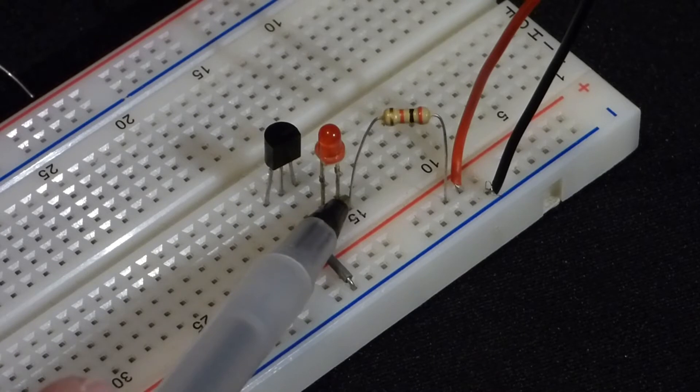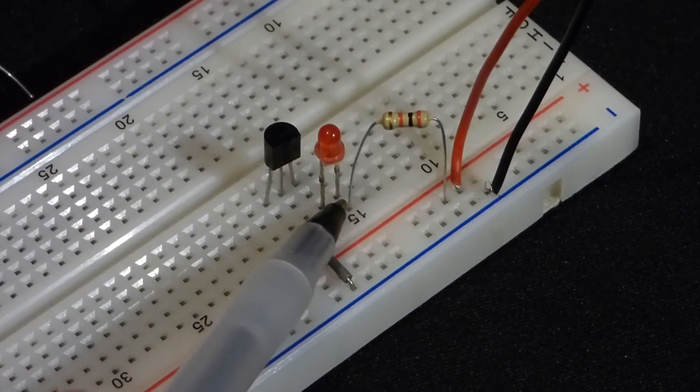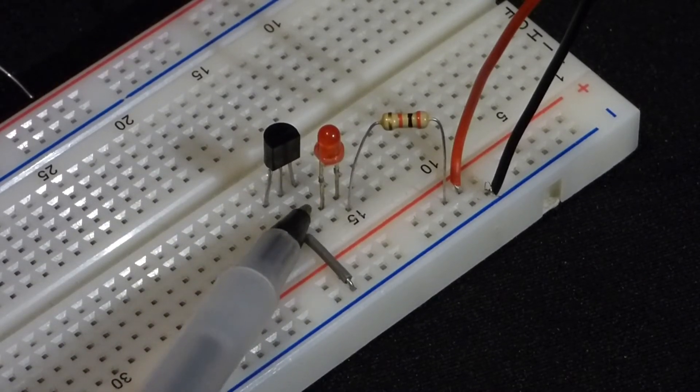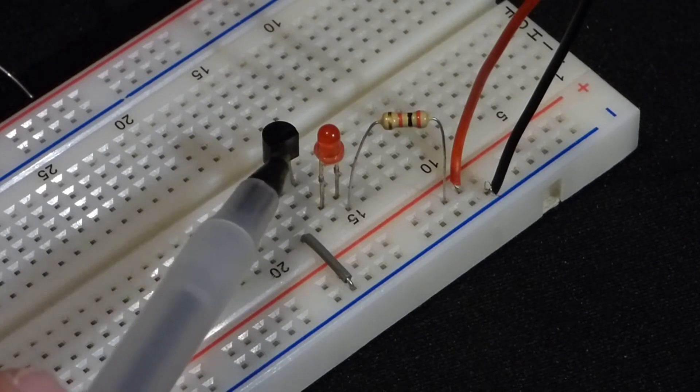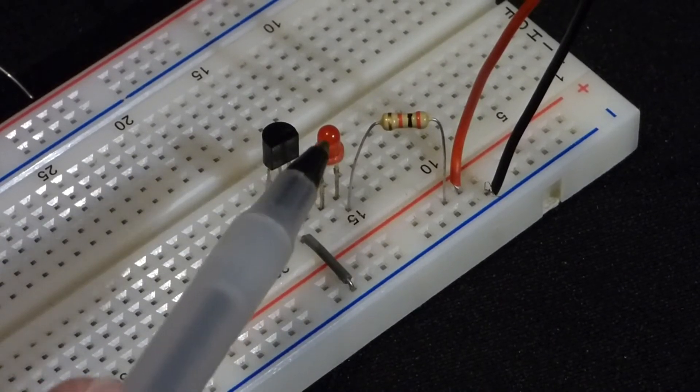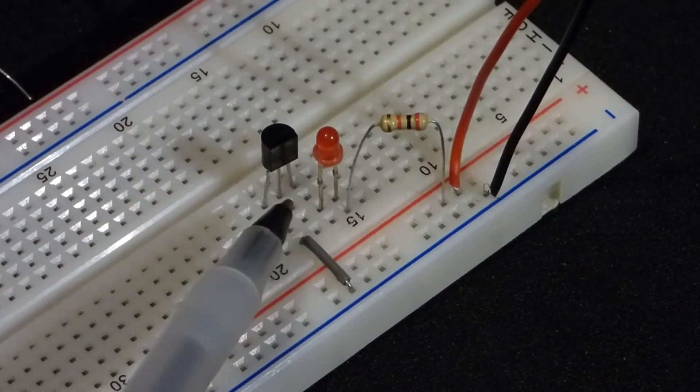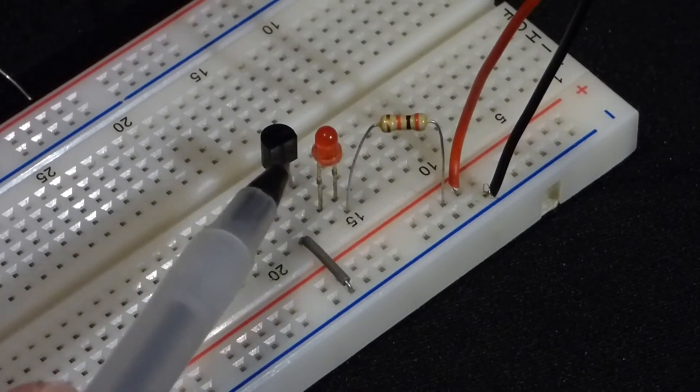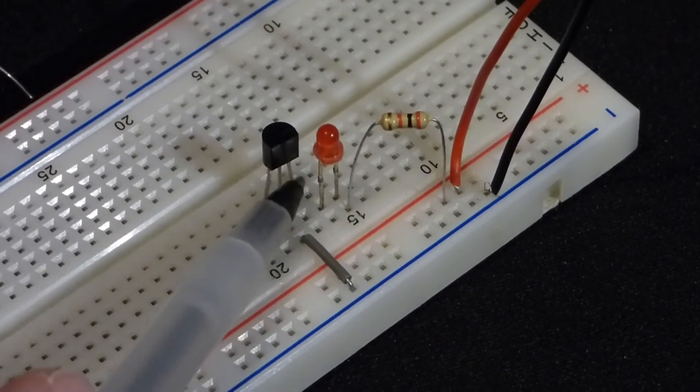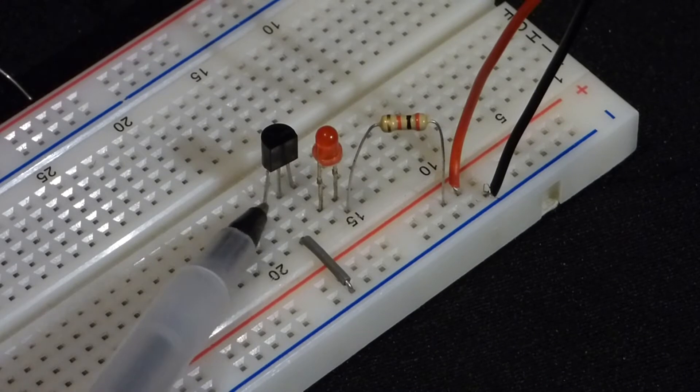And that comes to the long lead of the LED, the anode. Short lead of the LED comes to the collector of the transistor. That way the LED will conduct and light up when there's current flowing through it. So collector of the transistor is there, the emitter is here.